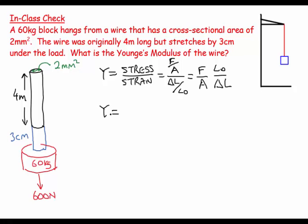Mathematically, Young's modulus is going to equal the force, which is 600 newtons, times the original length, which is 4 meters, divided by the area. This is where I get to check if you know your conversions, because this is going to be 2 times how many square millimeters in a square meter? This is 10 to the minus 6. Don't think linearly, think in terms of area.